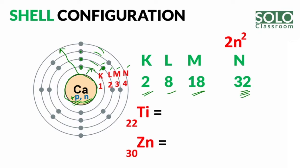We have learned these numbers. The shells are K, L, M, N. K has a maximum of 2 electrons, L is 8, M is 18, and N is 32.